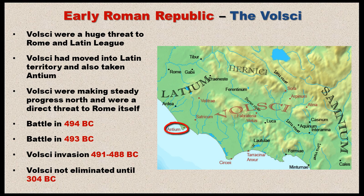One of the cities the Volscians seized was Antium, a coastal port city. From that city, they had a base of operations from which they could launch attacks into Latium, seizing several cities including Velitri. So the Romans had to deal with this threat or they might get overrun. In 494 BC, the Romans decided to provoke the Volscians.